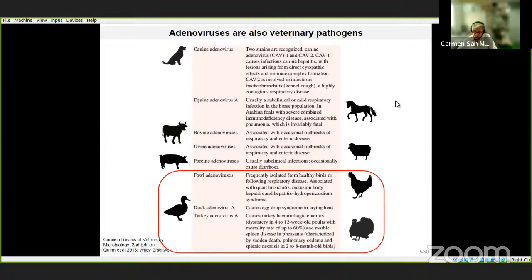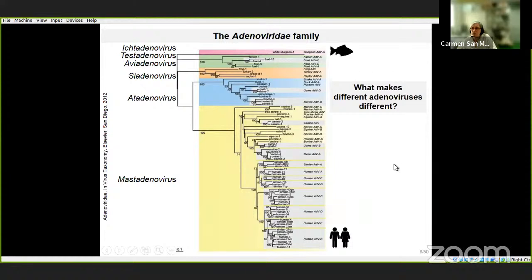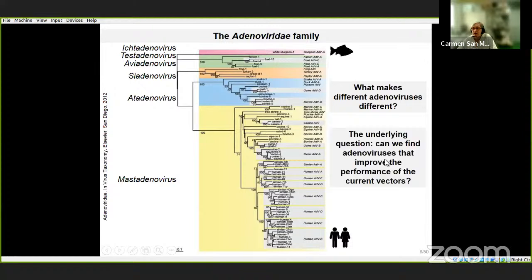Adenoviruses are also pathogens in animals of economic importance, causing serious losses particularly in the poultry industry. This is the current taxonomy: they are grouped in six genera and isolated from all vertebrates, from fish to humans. One line of research in my group tries to answer: what makes different adenoviruses different? Why do some infect fish and others humans? The underlying question is whether we can find adenoviruses in nature that could improve the efficiency of adenoviruses currently used as vectors.